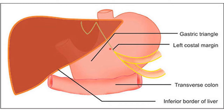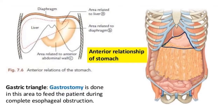The left boundary is formed by the left costal margin, the right boundary is formed by the inferior border of the liver, and the base or lower part is formed by the transverse colon. The apex is formed by the joining of the medial and lateral boundaries. This triangular space is called the gastric triangle.